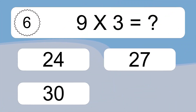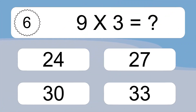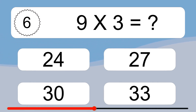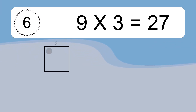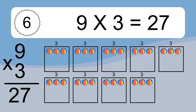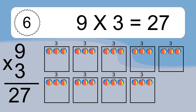9 times 3 equals what? 9 times 3 equals 27. We have 9 boxes, and each box has 3 colorful balls inside. If you count all the balls in all the boxes together, you will have 9 times 3 balls. This equals 27 balls.